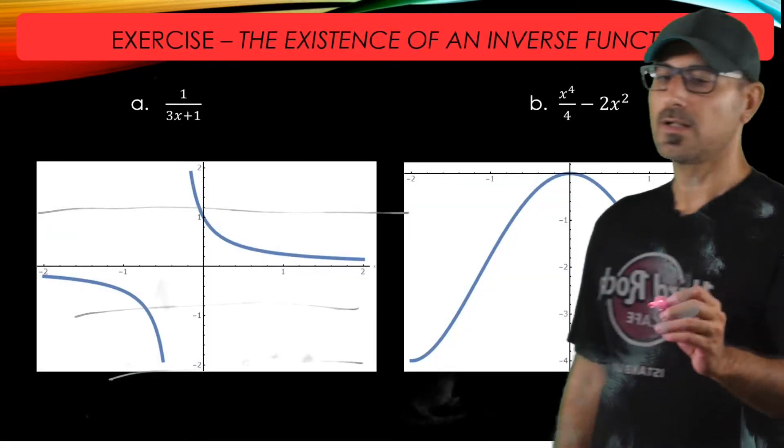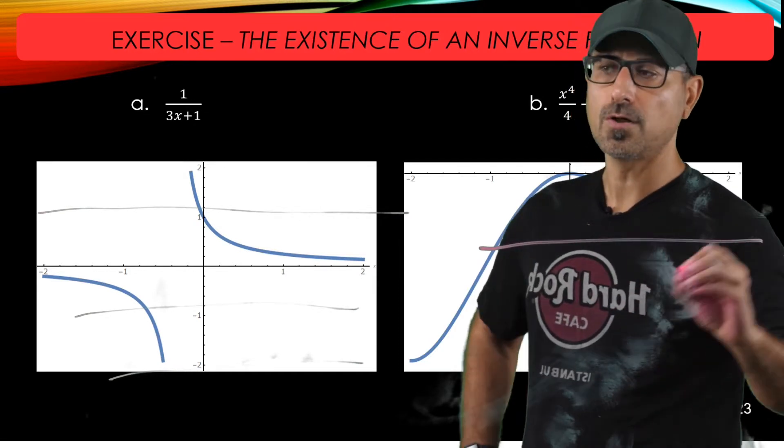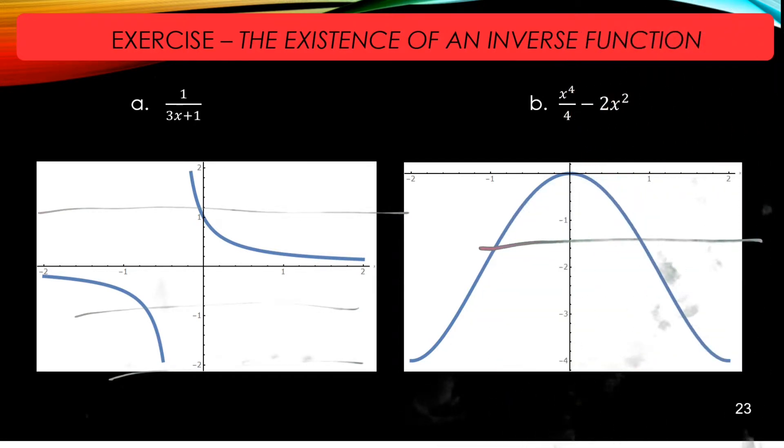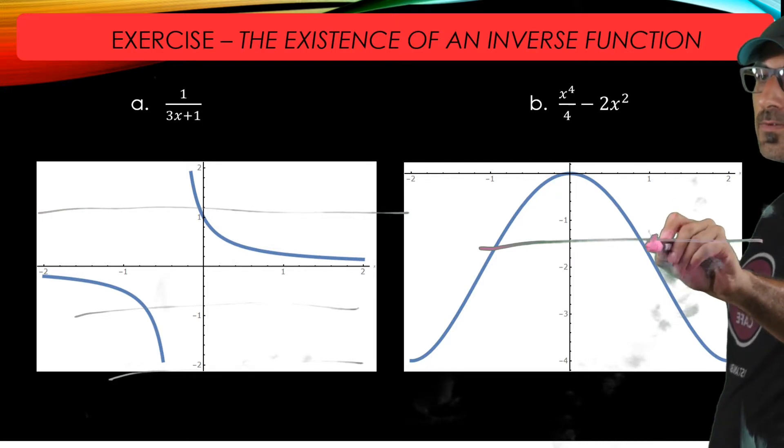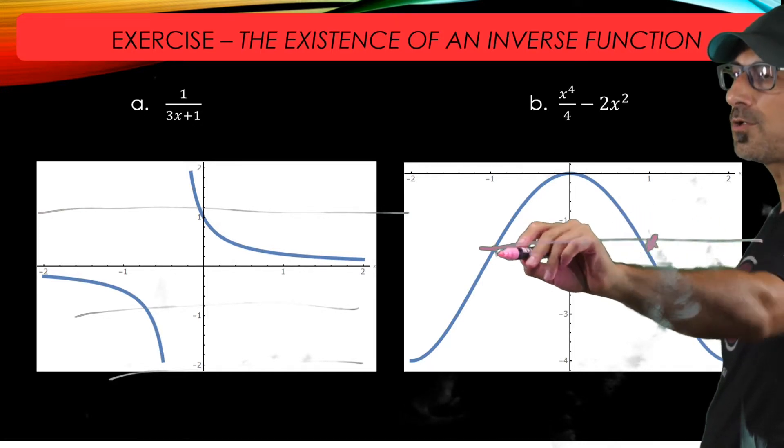However, this one fails to hold that property because if I pass a horizontal line, it crosses the graph at, as you see, two different locations.